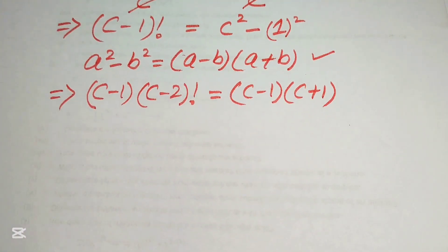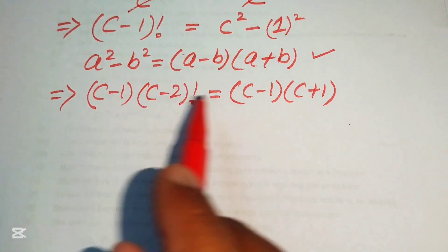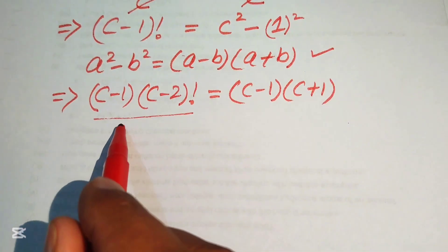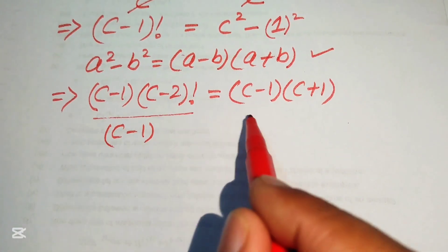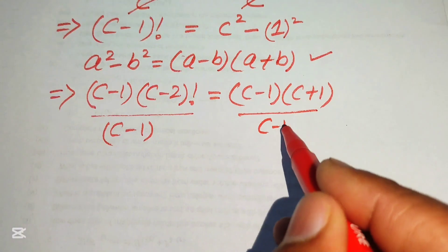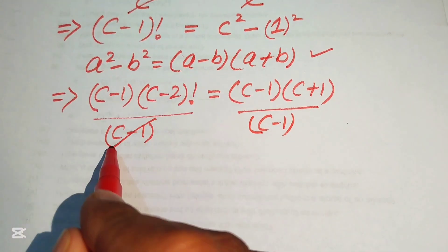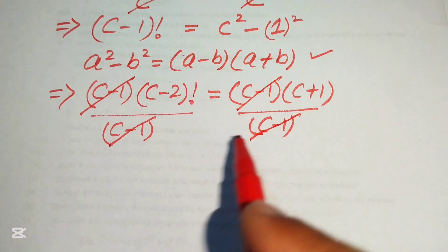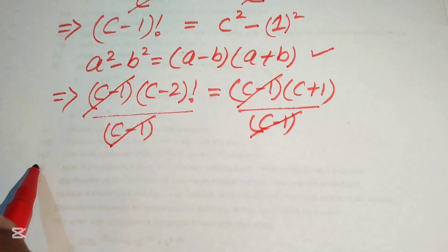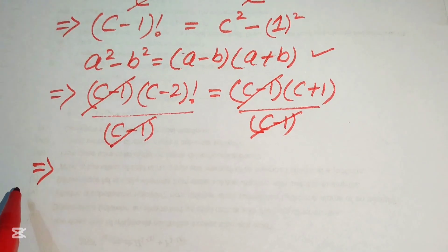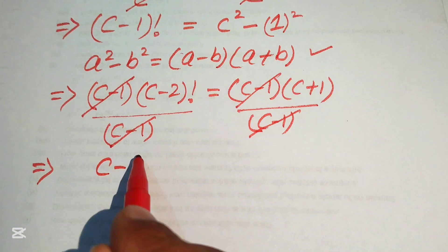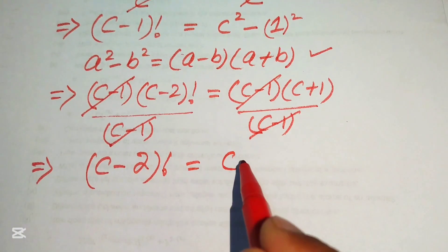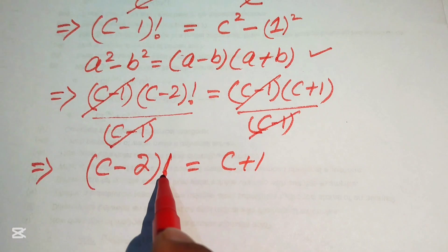We see that (c minus 1) appears on both sides, so we divide both sides by (c minus 1). Both factors cancel, and the remaining terms give us (c minus 2) factorial equals (c plus 1).